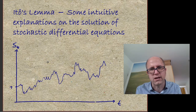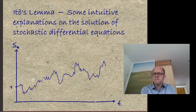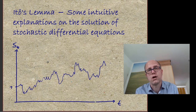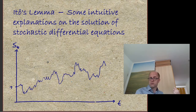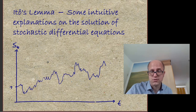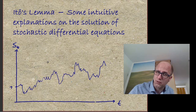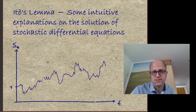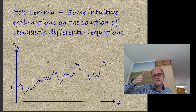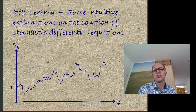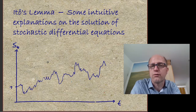Let me first explain in a couple of words what I think Ito's lemma is about. Assume that you have 100 euros and you lose 10 percent and then gain 10 percent. From 100 you get down to 90 and then back up — but not to 100, only to 99. So you've lost a euro. If you first gain 10 percent and then lose 10 percent, you go up to 110 and then down to 99 — you also lose a euro. That's due to the compound interest effect.